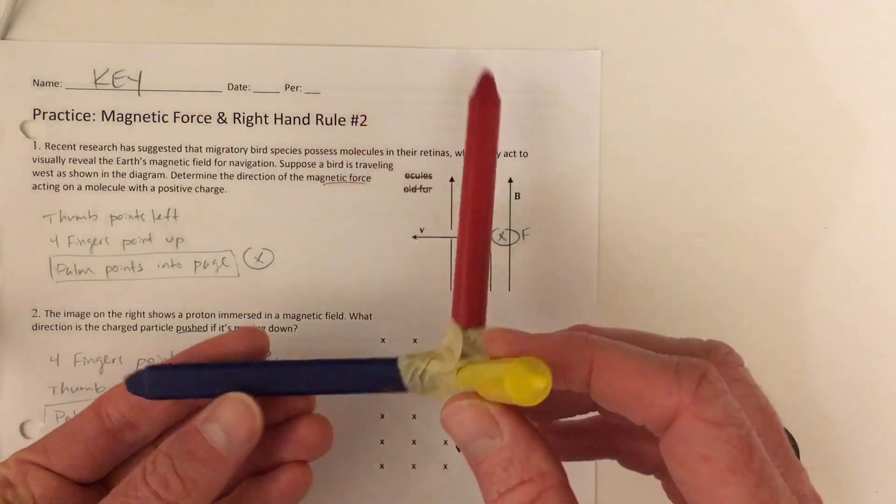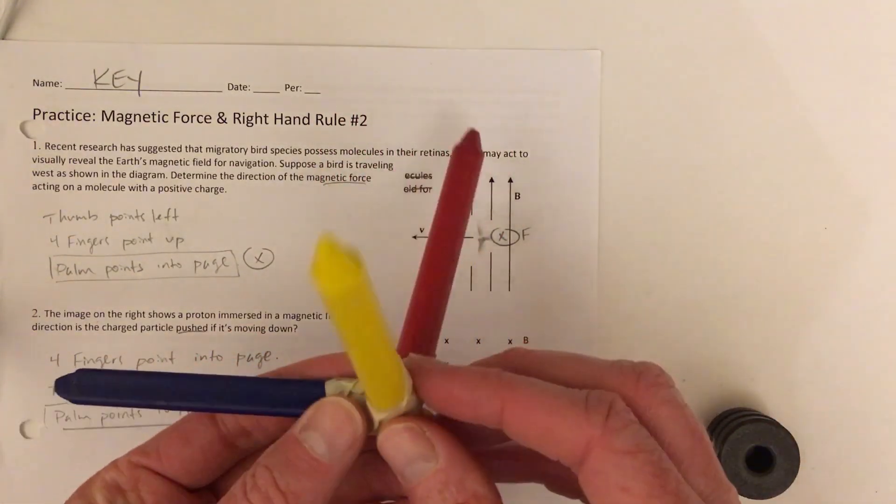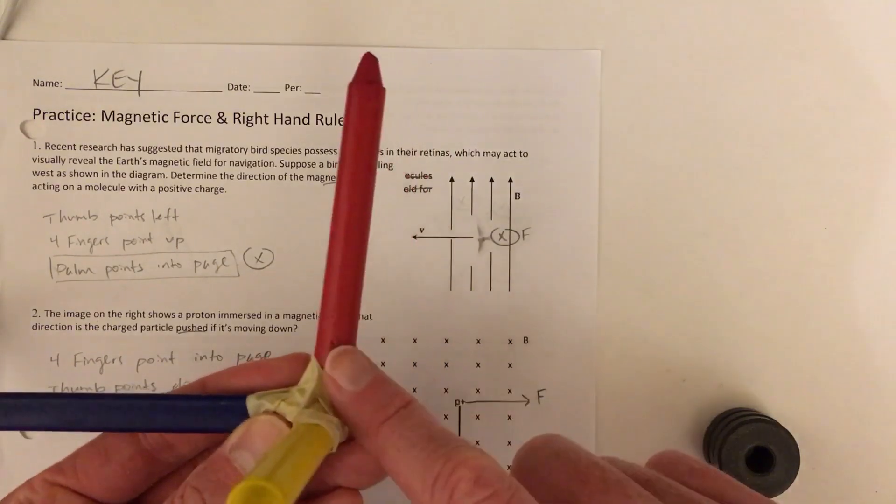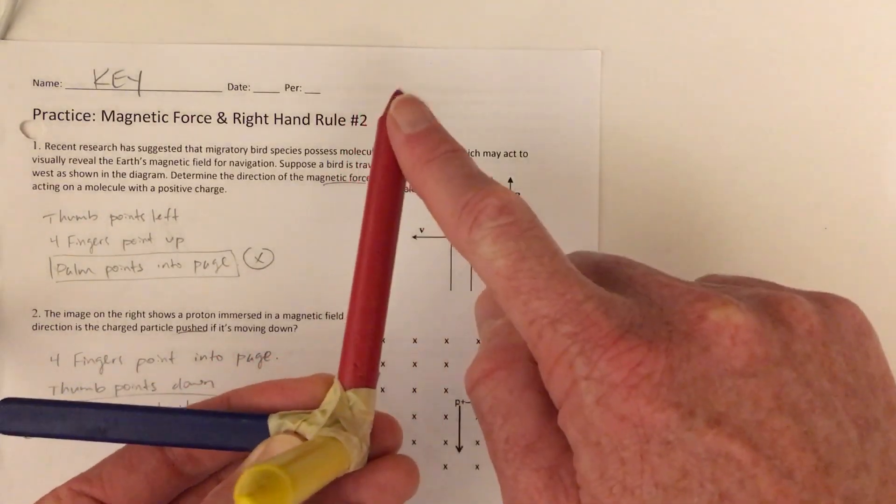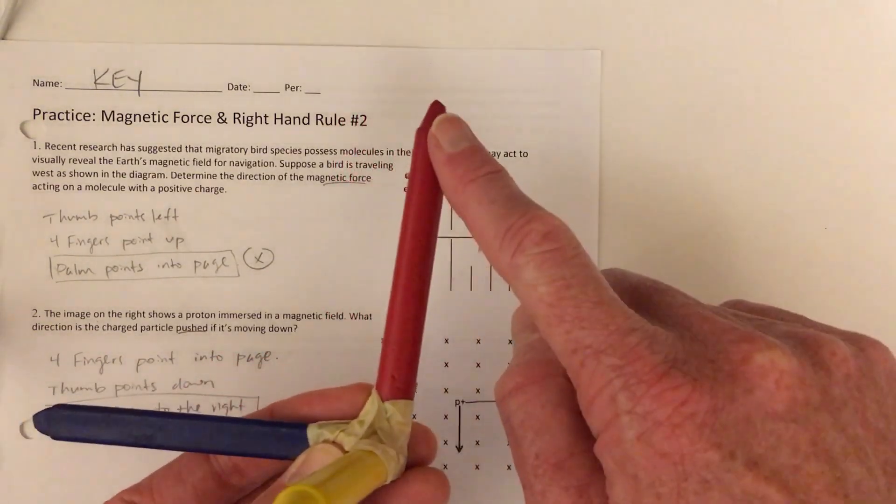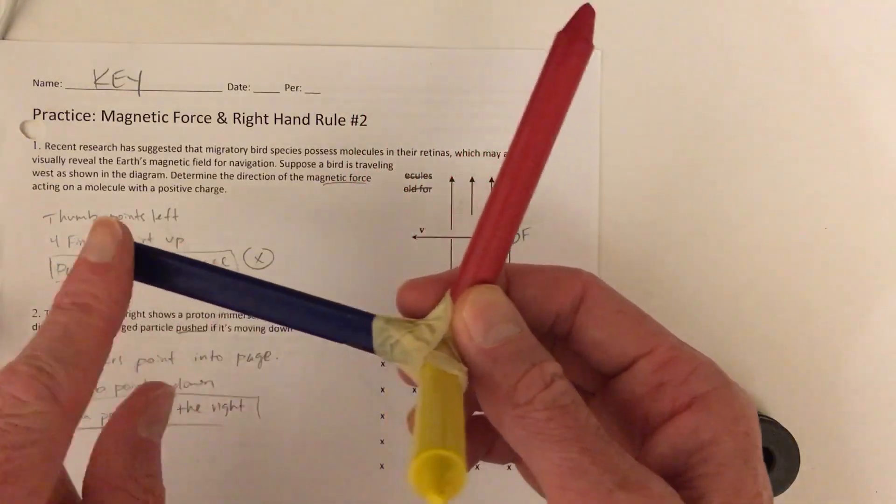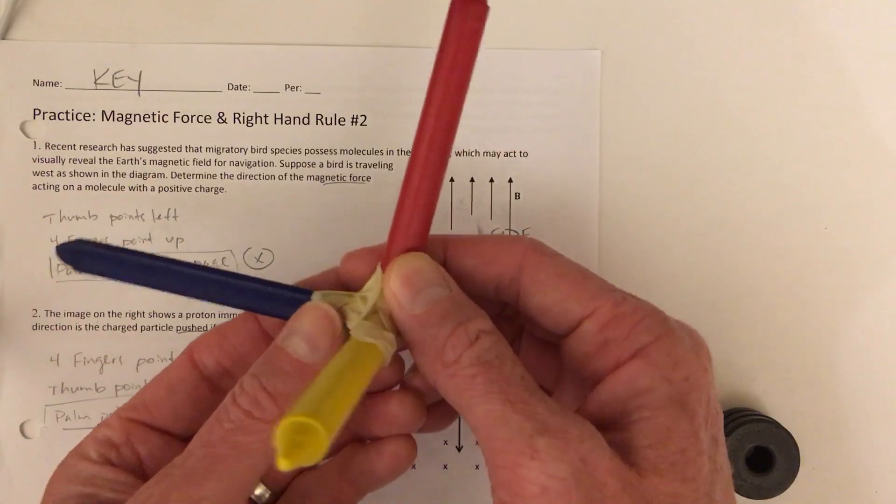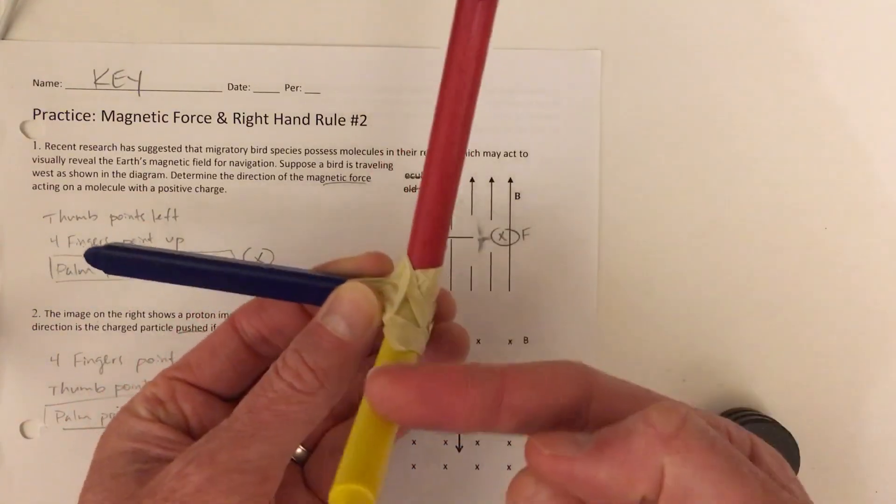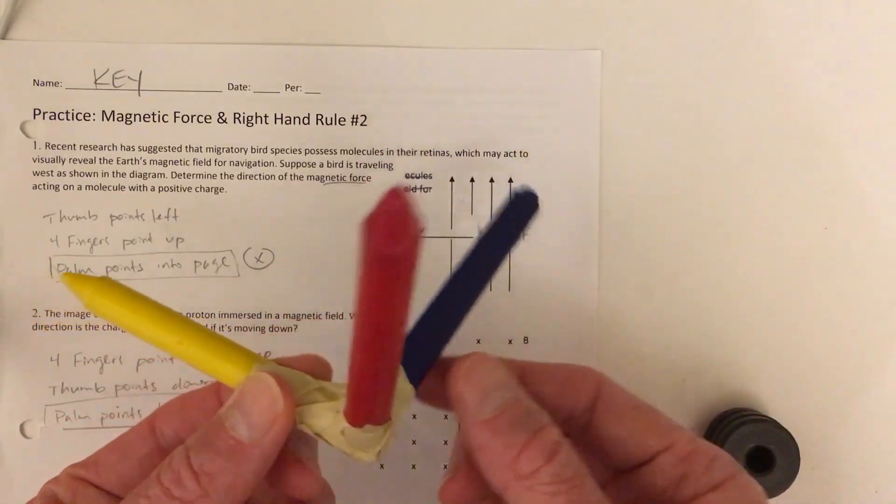First, just a review of the right hand rule. The big idea is that electric current or the direction that a particle is moving, when it is moving perpendicular to a magnetic field, it will experience a force that's perpendicular to both of them. The three of them form like the corner of a cube.